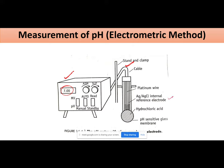In this glass electrode, you basically have a silver-silver chloride internal reference electrode filled inside your glass bulb. That glass bulb is filled with hydrochloric acid. The hydrochloric acid pH is fixed because it is sealed in this electrode and not getting contaminated — it remains fixed during usage. Then you have a platinum wire in between. This entire assembly is called a glass electrode.